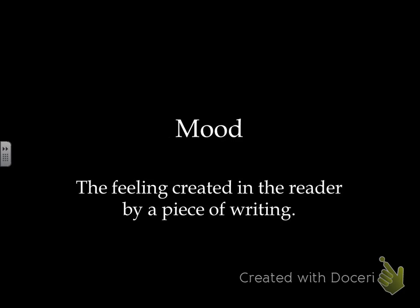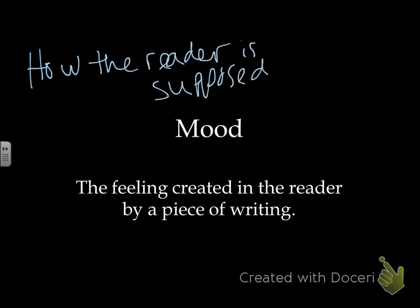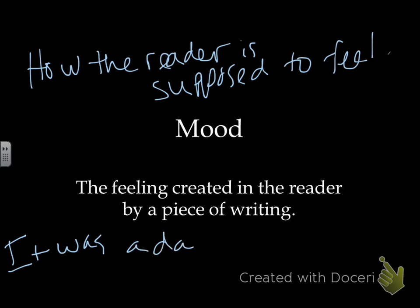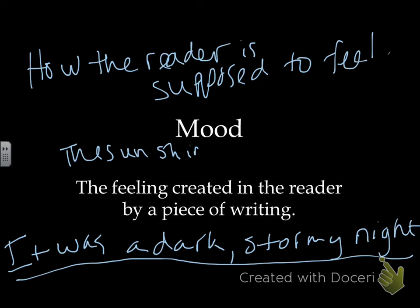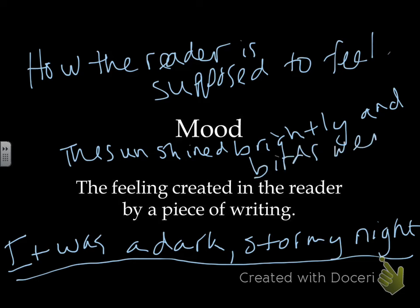Mood is the feeling created in the reader by a piece of writing — how the reader is supposed to feel. For example, 'it was a dark, stormy night' makes us think of something scary, so the mood would be scary. Whereas if a poem begins with 'the sun shined brightly and birds were chirping,' the mood is lighter and more happy.